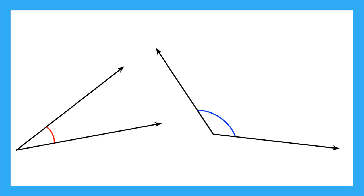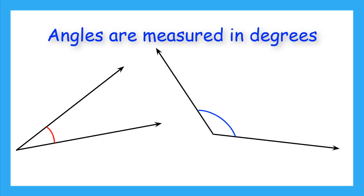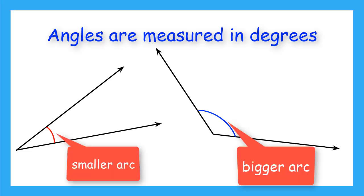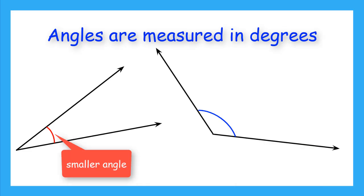We measure angles in degrees. When measuring an angle, we measure the space between the two rays. We draw an arc to represent the degrees, or how much space is between the rays. When looking at these two angles, you can see that the red arc is smaller than the blue arc. That means the angle with the red arc is smaller than the angle with the blue arc.